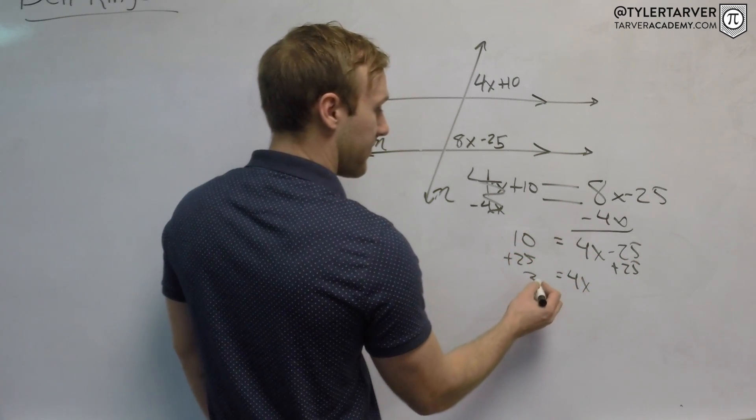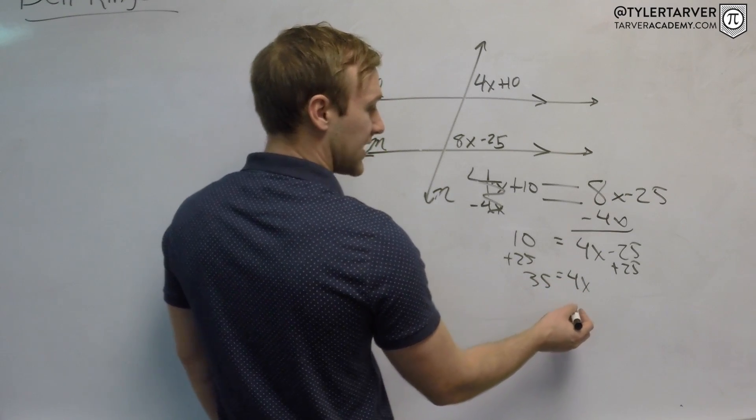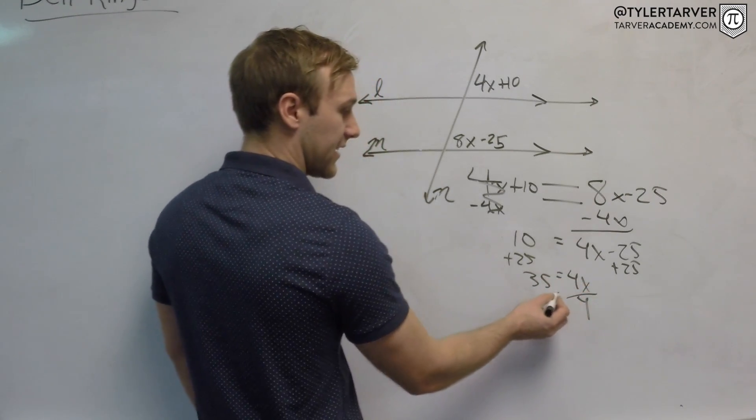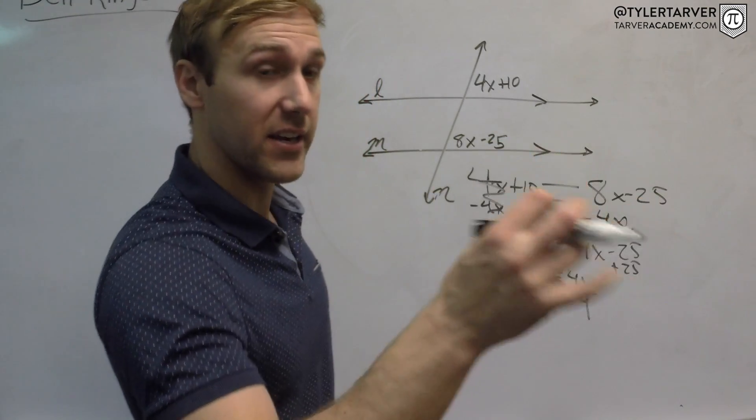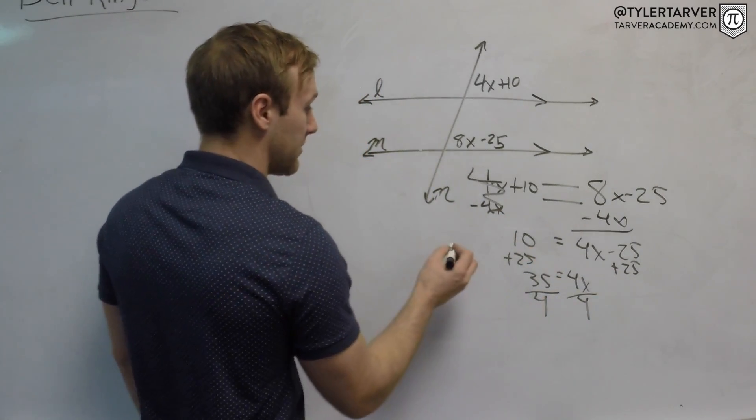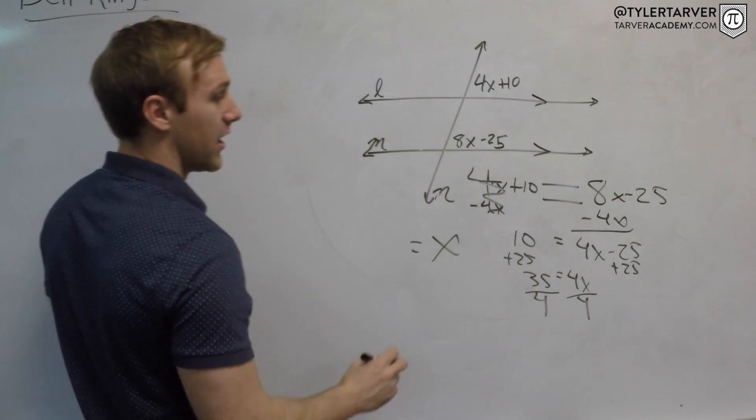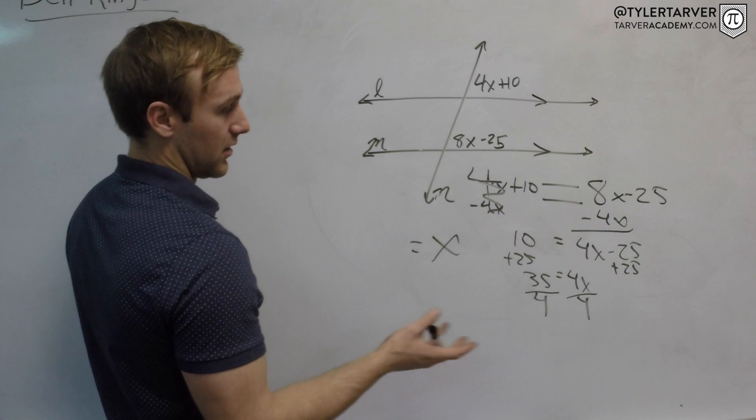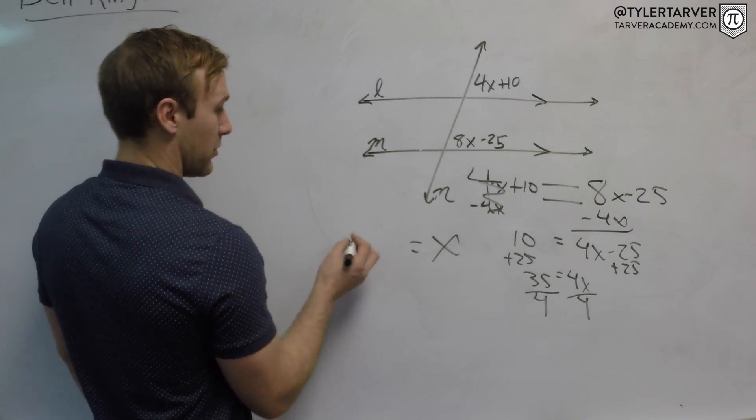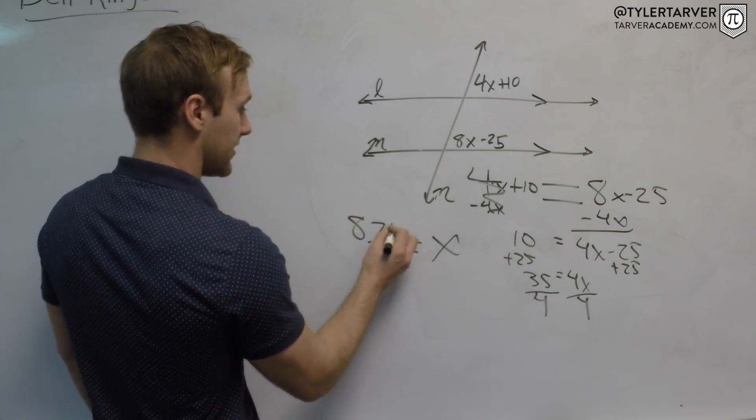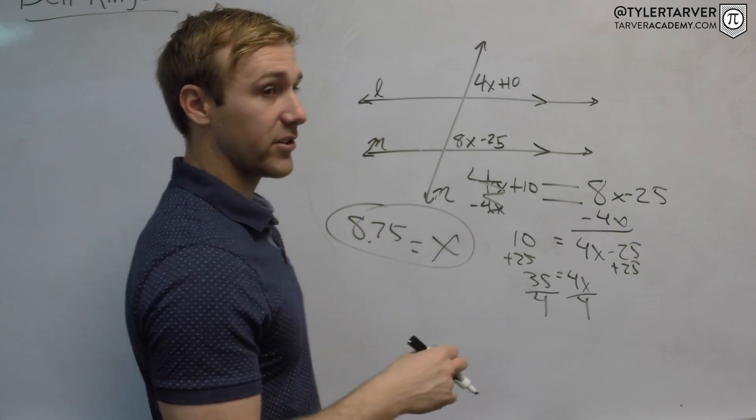So 4x equals 35, and then I divide both sides by 4 because it's 4 times x. The opposite of multiplying is dividing, so I divide both sides by 4. 4 goes into that 8.75 times. So I found x and you're done.